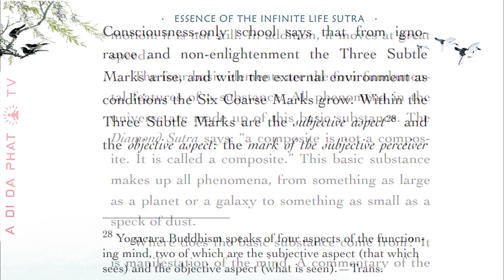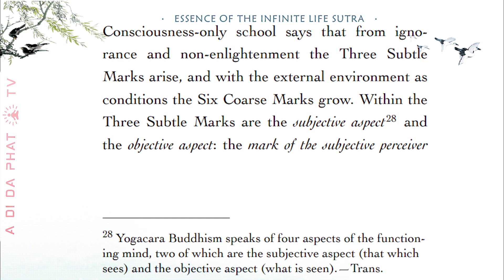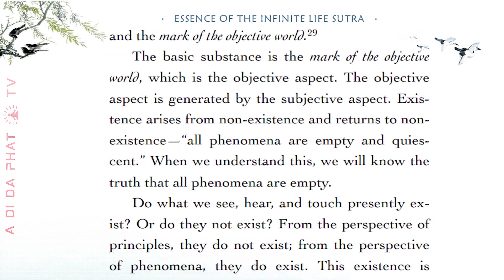A commentary of the consciousness-only school says that from ignorance and non-enlightenment the three subtle marks arise, and with the external environment as conditions, the six coarse marks grow. Within the three subtle marks are the subjective aspect and the objective aspect — the mark of the subjective perceiver and the mark of the objective world. The basic substance is the mark of the objective world, which is the objective aspect, and it is generated by the subjective aspect.